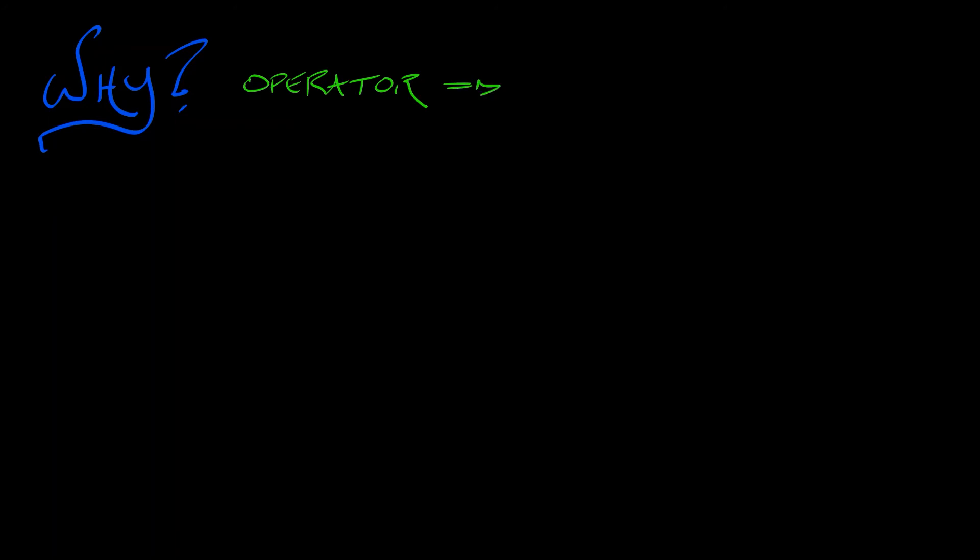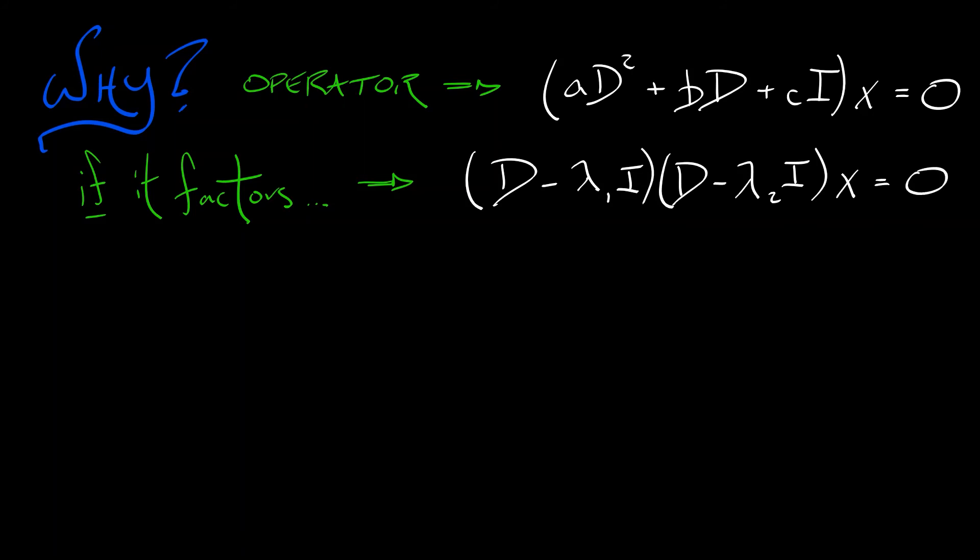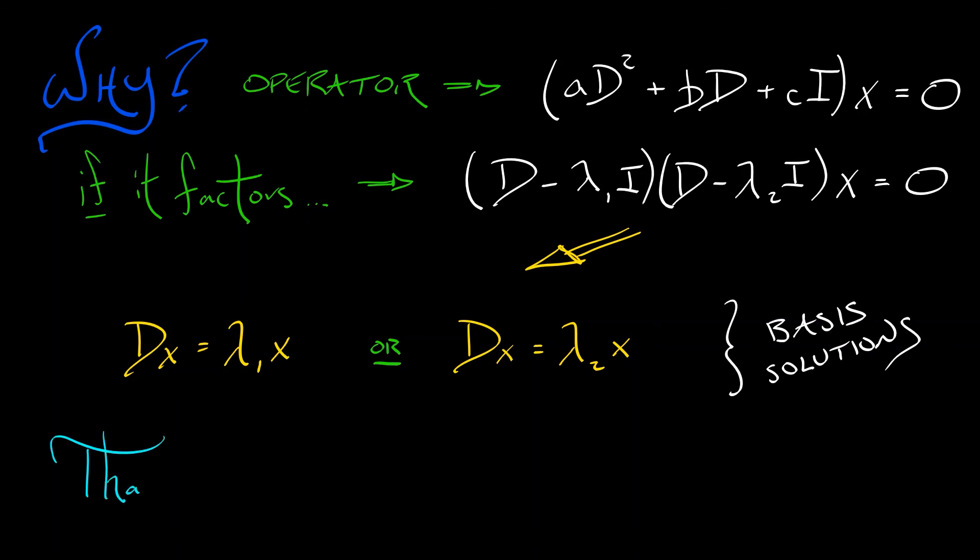Well, one way to explain it is to think in terms of operators. If we look at the operator version of this differential equation, then we have this polynomial differential operator, ad squared plus bd plus c times i applied to x equals zero. Now, what if we could factor that polynomial operator? In this case, it would factor as d minus lambda 1i times d minus lambda 2i. Apply that to x, you get zero, where lambda 1 and lambda 2 are the roots of this characteristic quadratic polynomial. If this is the case, then either the first term annihilates x or the second term annihilates x. That is, we either have dx equals lambda 1x or we have dx equals lambda 2x. These are first order equations. And these are really the sources for our basis solutions. Now, I kind of like that. I think that's a helpful perspective. But there's really more to it than this.